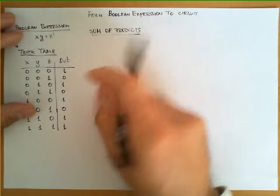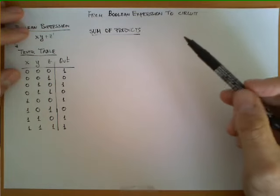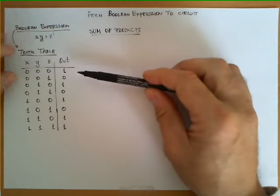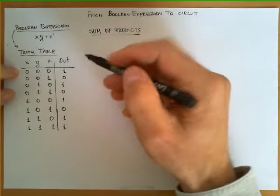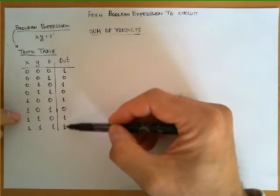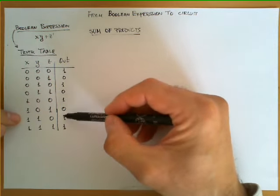The sum of product representation of this truth table over here requires us to create a product for each row in the truth table that has a value one in the output column.